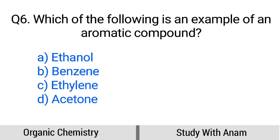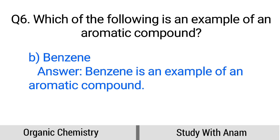Question number 6. Which of the following is an example of an aromatic compound? Option A: Ethanol, B: Benzene, C: Ethylene, D: Acetone. The correct option is option B, Benzene. Benzene is an example of an aromatic compound.